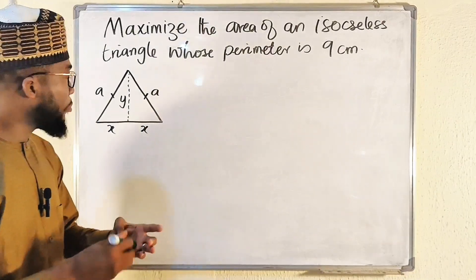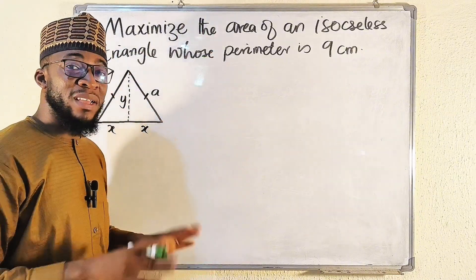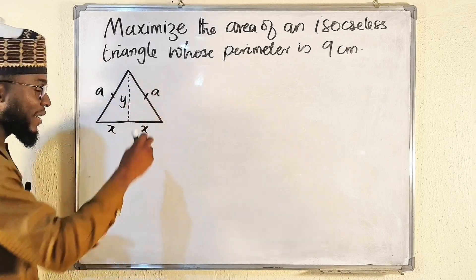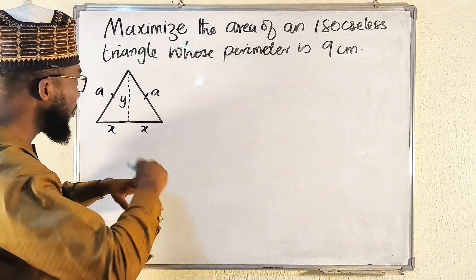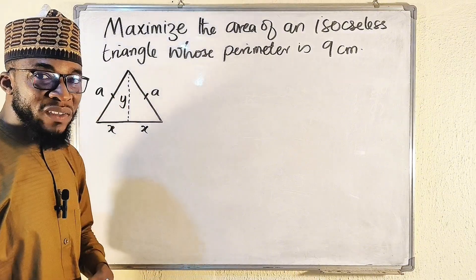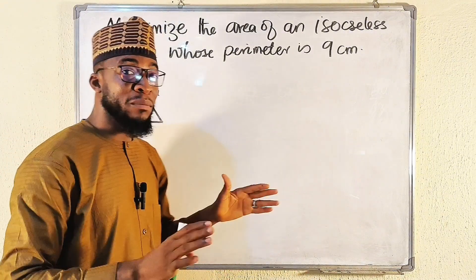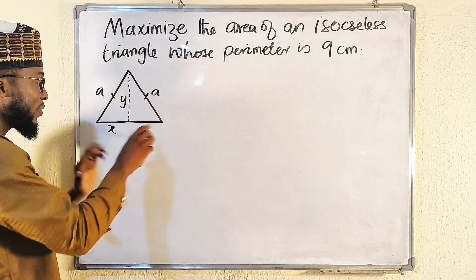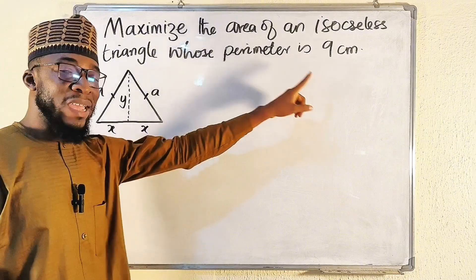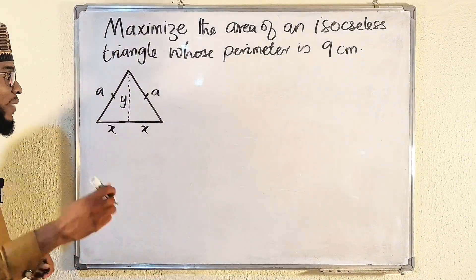Before we continue, what does it mean to maximize or minimize area? It means we can adjust and expand the side lengths however we like, such that the triangle has maximum or minimum area, provided the perimeter remains the same. So we will adjust the triangle while keeping the perimeter constant.